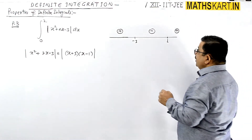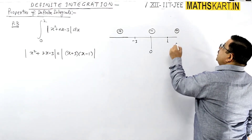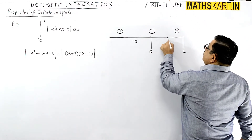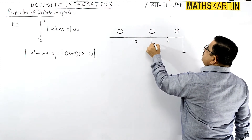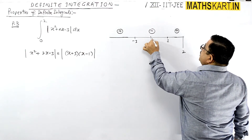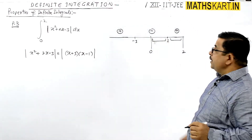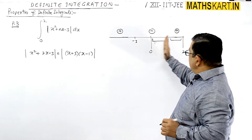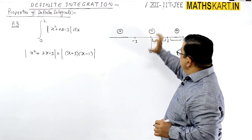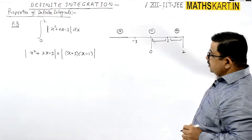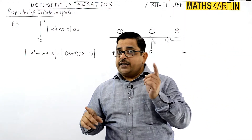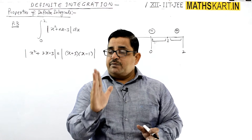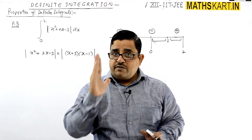So 0 comes here, 0 is here, and 0 is here. The curve is differently defined. We partition from 0 to 1 and from 1 to 2. The main critical point was 1 and -3. So from -3 to 1 the expression is negative, and from 1 to infinity it will be positive.